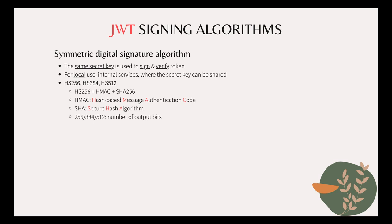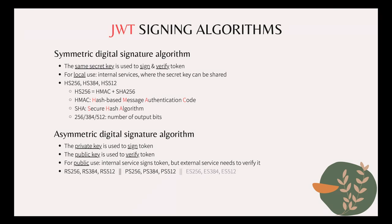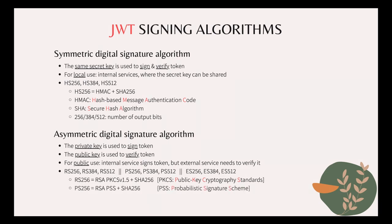However, we cannot use symmetric key algorithm in case there's an external service that wants to verify the token, because it would mean we must give them our secret key. In that case, we must use the second category — asymmetric key algorithm. In this type of algorithm, there's a pair of keys instead of just one single secret key. The private key is used to sign the token, while the public key is used only to verify it. Therefore, we can easily share our public key with any external third-party services without worrying about leaking our private key. Within this asymmetric key category, there are several groups of algorithms, such as the RS group, PS group, or ES group. RS256 is basically RSA algorithm with PKCS version 1.5 and SHA256. PS256 is also RSA algorithm, but with probabilistic signature scheme and SHA256 — designed to be more secure than PKCS 1.5. And ES256 is simply elliptic curve digital signature algorithm with SHA256.